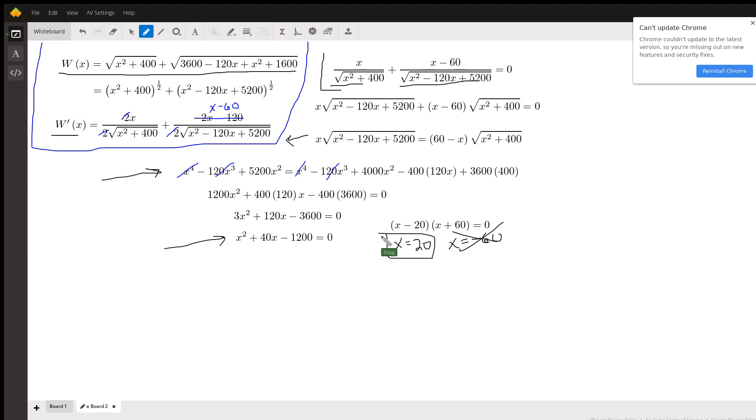We should use the first derivative test to make sure that that 20 is giving us a minimum value. I won't do that here. And there you go, that's how you find the anchor point: 20 feet from the base of the short pole.